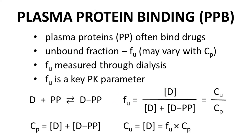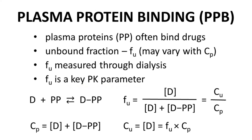FU is determined experimentally by dialysis analysis of plasma containing the drug. Once FU is known, the unbound concentration of a drug can be calculated from a measured CP value. Unbound fraction is considered to be one of the key pharmacokinetic parameters of a drug.